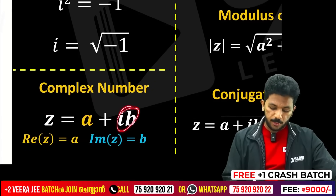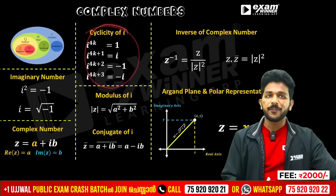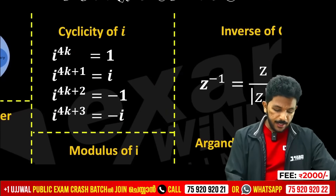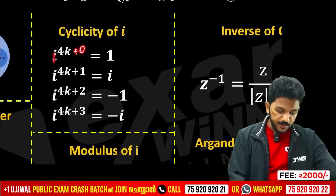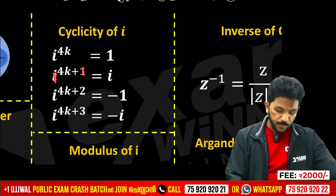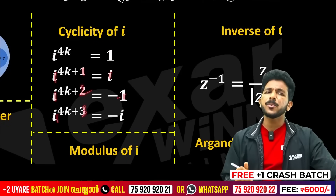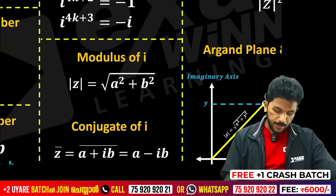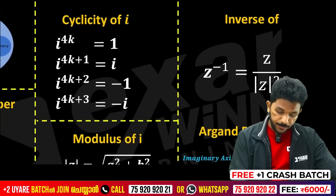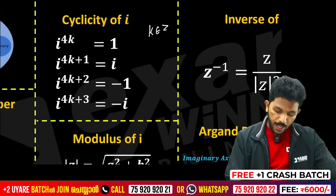If a is zero, the number is purely imaginary. If b is zero, the number is purely real. Cyclicity of i: i raised to 0 is 1, i raised to 1 is i (any number raised to 0 is 1), i squared is minus 1, i cubed is minus i. For 4k it equals 1, for 4k+1 it equals i, k belongs to integers. Negative powers are important.